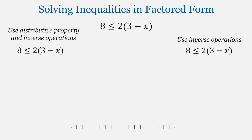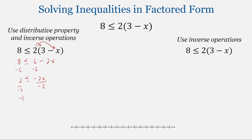Let's try another problem and solve it using both methods. First we'll use the distributive property, giving us 8 less than or equal to 6 minus 2x. Now we'll solve this inequality: subtract 6 from both sides, resulting in 2 less than or equal to negative 2x. Then dividing both sides by negative 2, we get negative 1 on the left and x on the right. Since we divided by a negative number, we switch the direction of the inequality, and rewriting with the variable on the left gives us x less than or equal to negative 1.